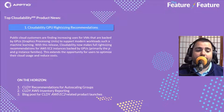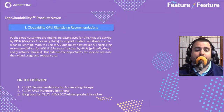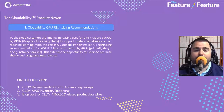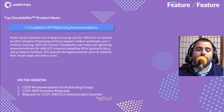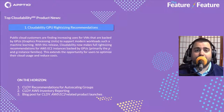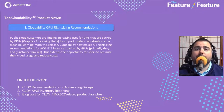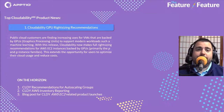On the horizon, Cloudability recommendations for Auto Scaling Groups are coming out really soon. AWS Inventory Reporting is going to be a major enhancement to Cloudability as well in the next few weeks. We also have a blog post for the AWS EC2-related product launches coming out next week, plus a few other blog posts about services offered in AWS, how we support them, and how our customers are using them.